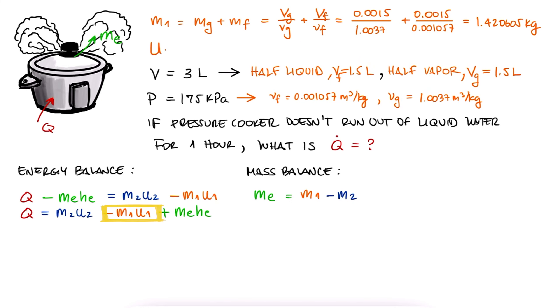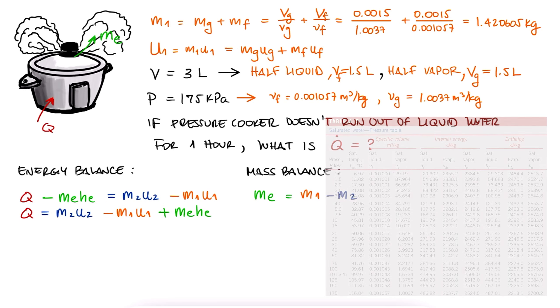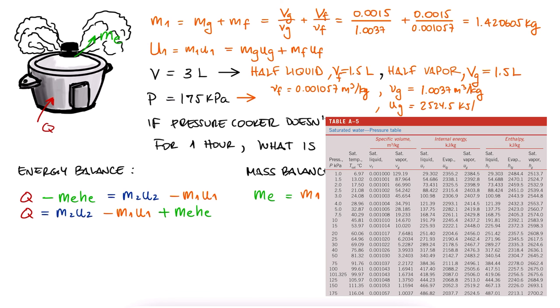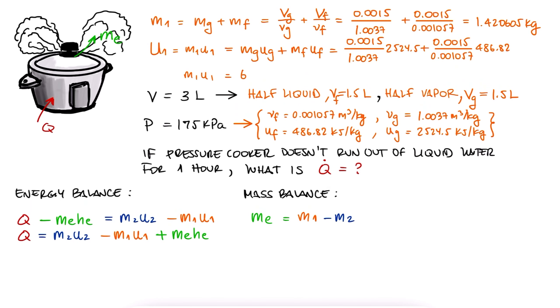The associated internal energy would be M1u1 equal to MgUg plus MfUf so we write down the specific internal energy values Ug and Uf and find M1u1.